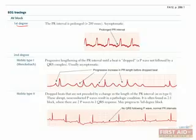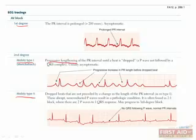For second degree heart block, there are two types called Mobitz type 1 and Mobitz type 2. Mobitz type 1, also known as Wenckebach, is when the PR interval gets longer and longer until eventually a QRS complex is completely dropped. Mobitz type 2, on the other hand, happens when there is just a random loss of QRS complexes without any change in the PR interval.